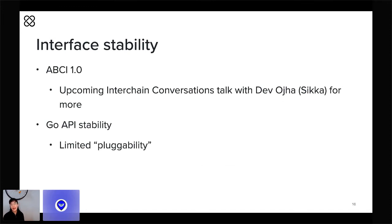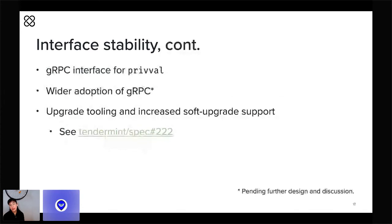In the 1.0 release we're going to be refactoring several key components, and this decision to limit pluggability will leave us more room to operate and help us build confidence in these interfaces before we make any of them public. We are also going to adopt gRPC for communication between Tendermint and the signing tooling known as PrivVal, and we'll be evaluating the possibility of adopting gRPC more widely across our entire RPC layer. Finally, we'll be investing in increasing the range of changes that can happen through soft upgrades, through a mix of upgrade tooling and more aggressive versioning.